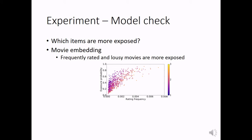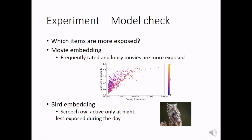We also have some results from bird embedding. The bird species, screech owl, is active only at night. In our learned model, it is less exposed in observations during the day. So this is reasonable.